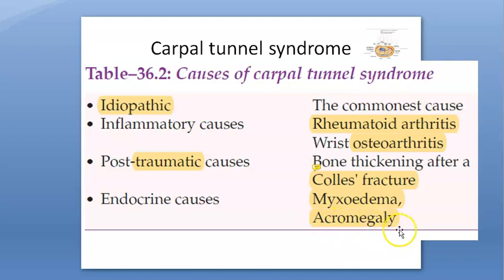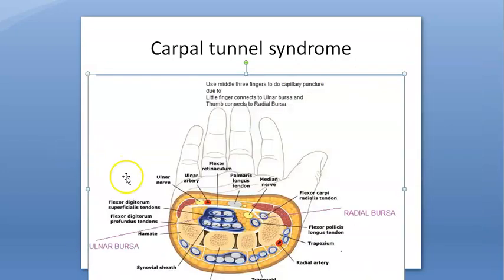Endocrine causes include acromegaly and myxedema. Acromegaly is excess growth hormone after closure of the epiphysis — almost everything in the body will become large. Myxedema is like hypothyroidism. These patients will complain of tingling and numbness.